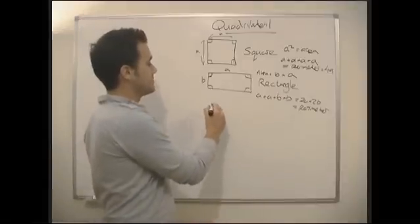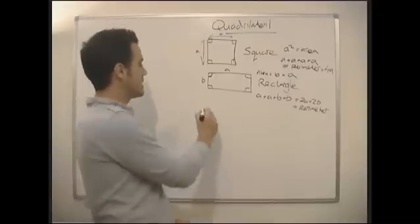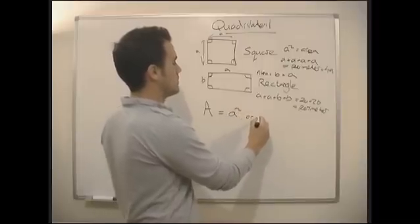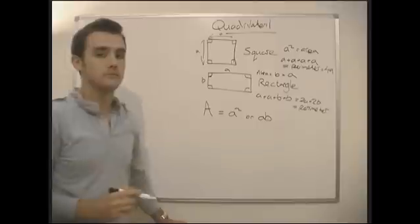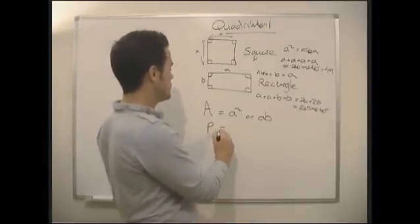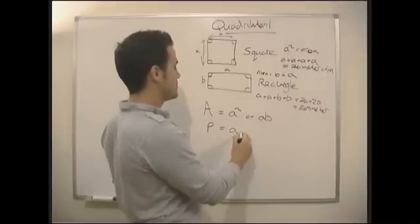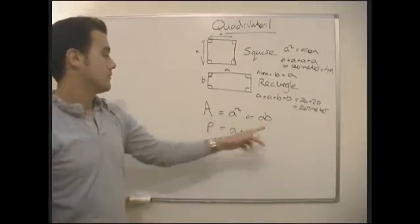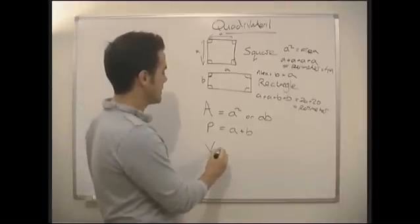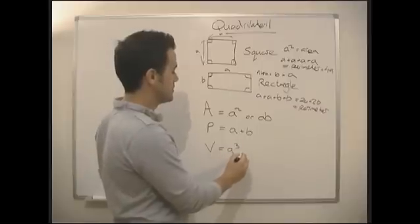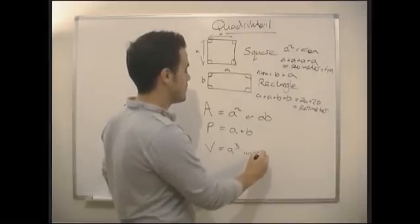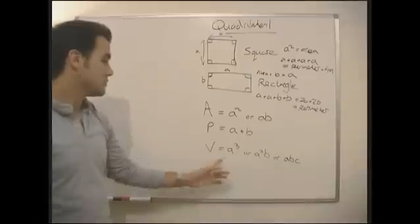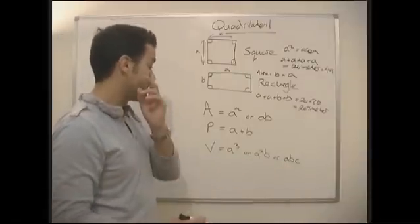An area always has to have two length terms multiplied together, so an area must always have either a² or two length terms times together. A perimeter must always just have a single length term on its own — it could be a + b or 2a + 2b, but you can't have two length terms multiplied together for a perimeter. A volume must have three length terms multiplied together — for a cube it would be a³, or it could be a²b, or it could be a × b × c.